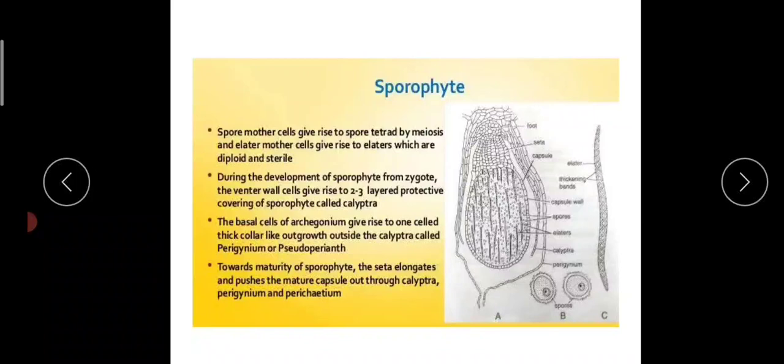Male and female thalli develop antheridiophores containing the antheridium, and likewise archegoniophores containing the archegonium respectively. In these sex organs they develop respective gametes: egg and antherozoids are formed, and they cause fertilization through splashing raindrops.